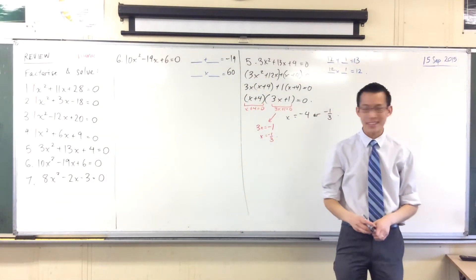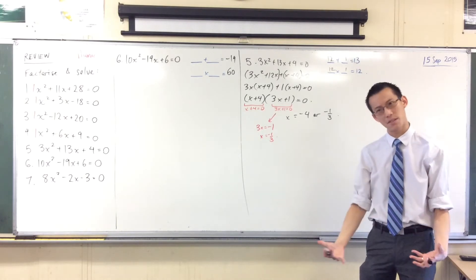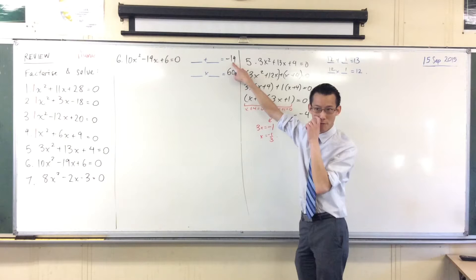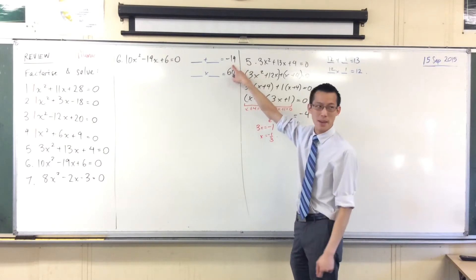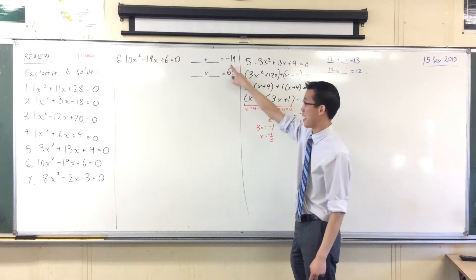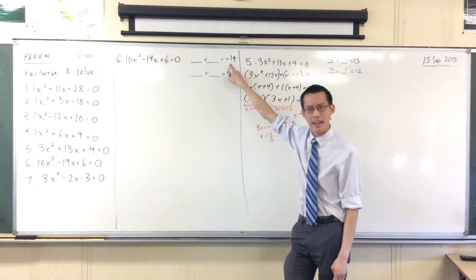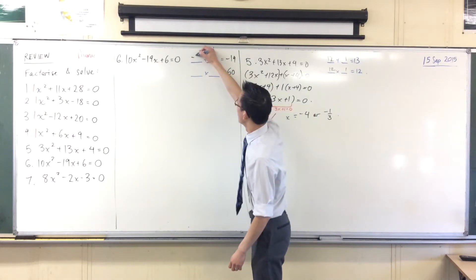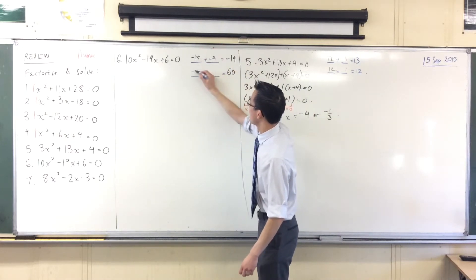Now, when you have a look at this, 60 is a big number. It's got lots of factors, but you can round it down when you see this minus 19, right? It looks to me like this is going to be two negative numbers because they've got to multiply positive, but somehow they're going to add to be negative. So what two negatives did you think of? Yeah. Very good. Negative 15, negative 4.